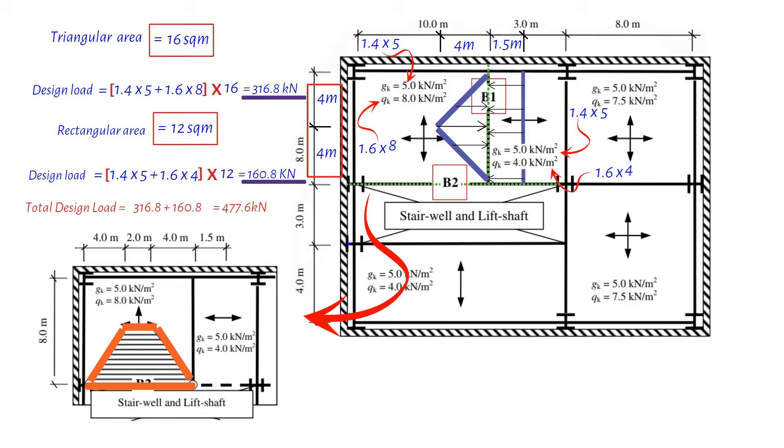To figure out how much weight beam B2 can handle, we first need to know how big this trapezoid is. So we take the lengths of its top and bottom sides, that's 2 meters and 10 meters, add them together, and then halve it. Multiply this with the height of the trapezoid, which is 4 meters. Do all that, and we find out our trapezoid is 24 square meters in size.